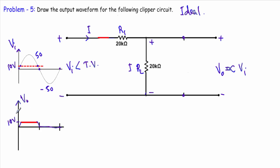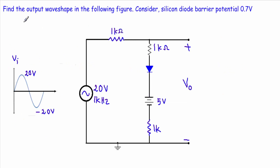This is a level of plus 10 volt on our complete output. This is my last example of clipper circuit — example number six. In this circuit we have to find the output wave shape, and in this case we have to consider the diode built-in potential — the silicon diode barrier potential equal to 0.7 volt. We have three resistors of 1 kilo ohm each and a bias voltage of 5 volt. The input is a sinusoidal voltage with positive peak of plus 20 and negative peak of minus 20 volt.